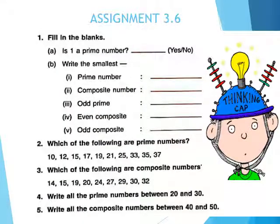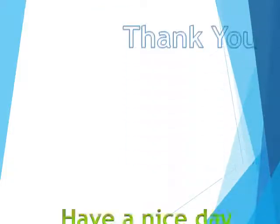Here is a small assignment for you, so that you can distinguish between prime numbers and composite numbers. You have to fill in all the blanks, identify which numbers are prime and which are composite, write down the prime numbers between 20 to 30, and the composite numbers between 40 to 50. Thank you, dear students.